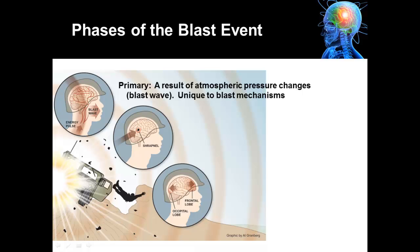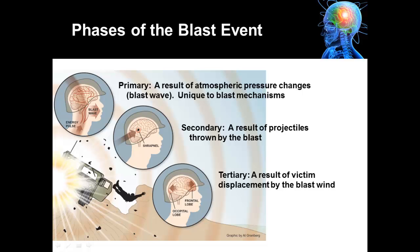Primary blast injury is very unique to blast mechanisms — you're not going to see this with other types of causes of injury. The secondary blast force is a result of projectiles thrown by the blast. The tertiary blast injury is a result of victim displacement, where the body is lifted up and thrown against the ground or a wall. The quaternary blast injury is the result of toxins, heat, and even structural collapse after the explosive event.